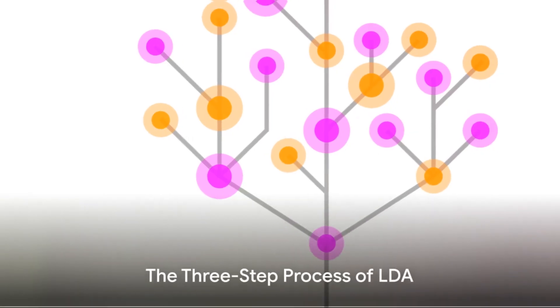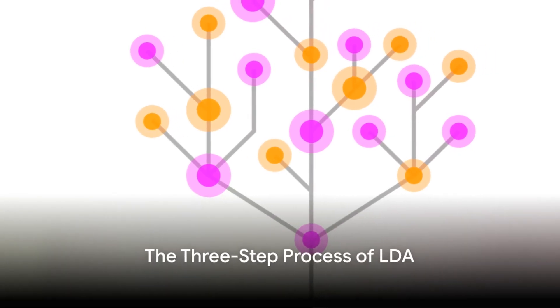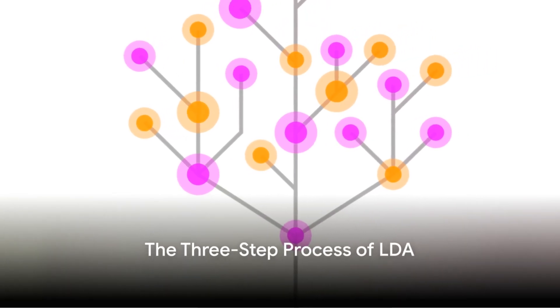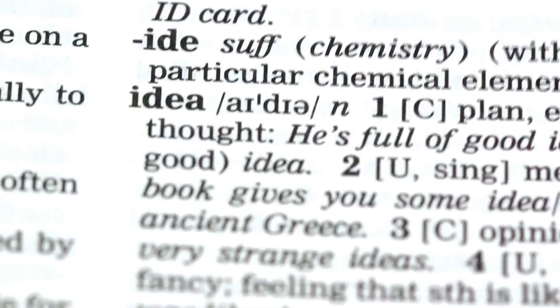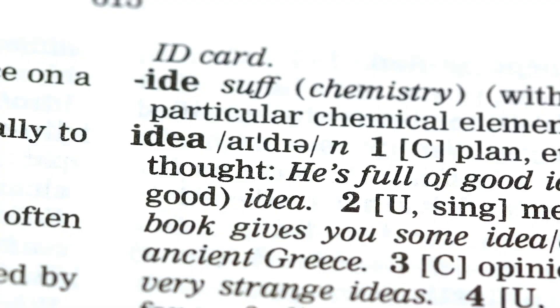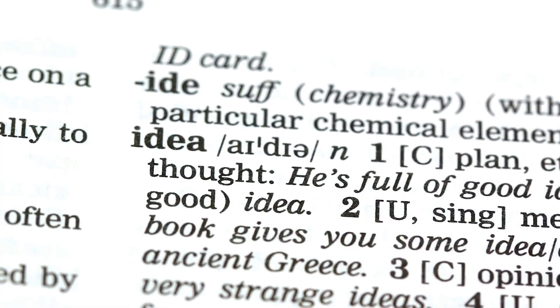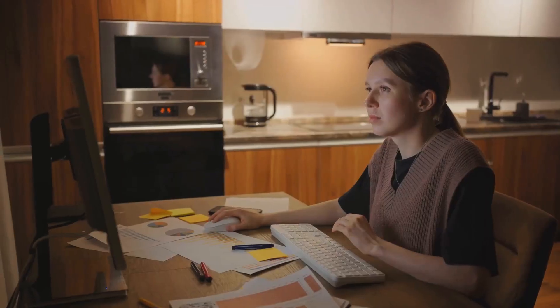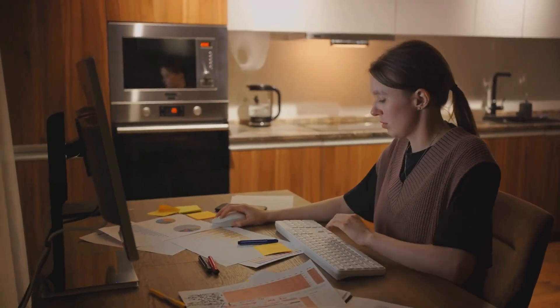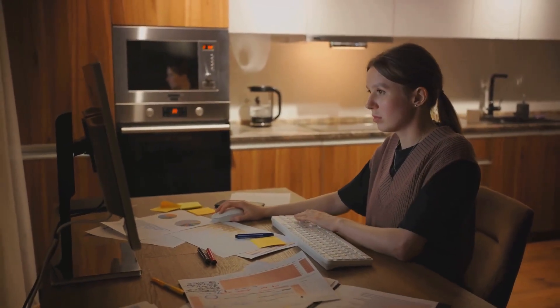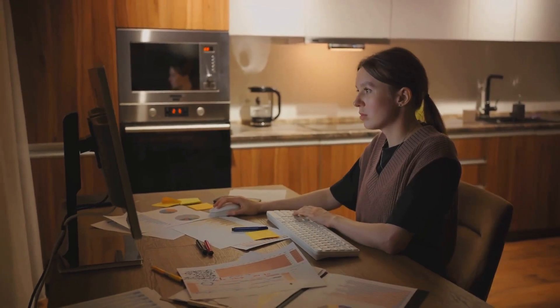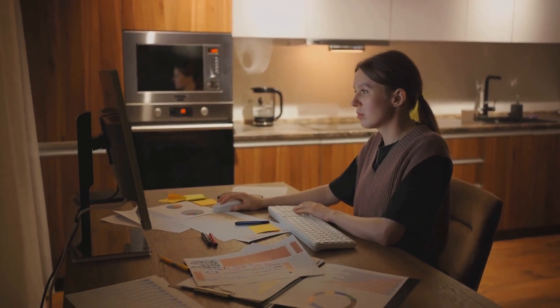So how does LDA accomplish this feat? It's a three-step process. First, it randomly assigns each word in each document to a random topic. At this stage, you might end up with topics that make no sense, but bear with us — it's just the starting point.